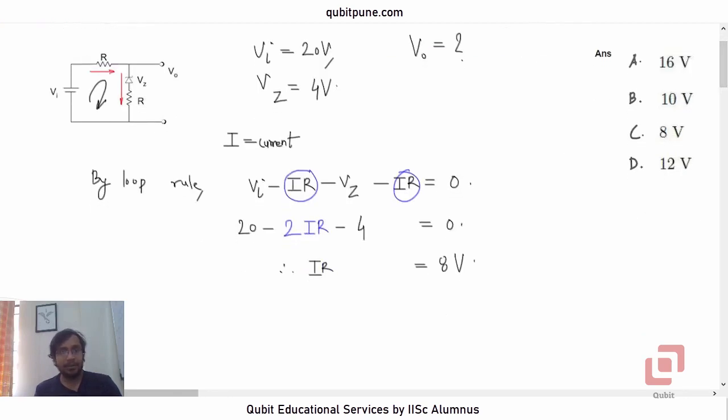Now, what will be the potential difference across the ends? Vo must be equal to Vi minus IR. Okay, because these two ends, the voltage across these two ends is essentially the same as Vo.